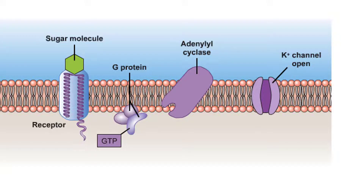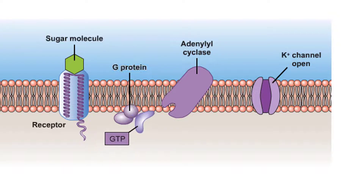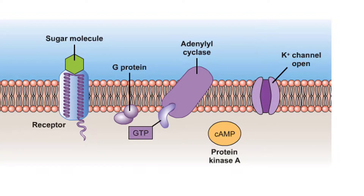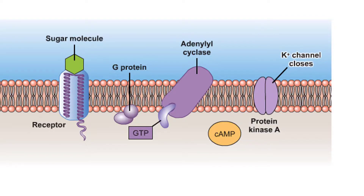The sugar molecule is the first messenger that triggers a cell transduction pathway, and this leads to a G-protein being activated. Remember that G-proteins are secondary messengers. This then stimulates the enzyme adenylyl cyclase to produce cAMP from ATP. The rest of the details are still being worked out, but one model proposes that cyclic AMP activates a protein kinase that phosphorylates and closes potassium channels. Another model suggests that calcium channels open.